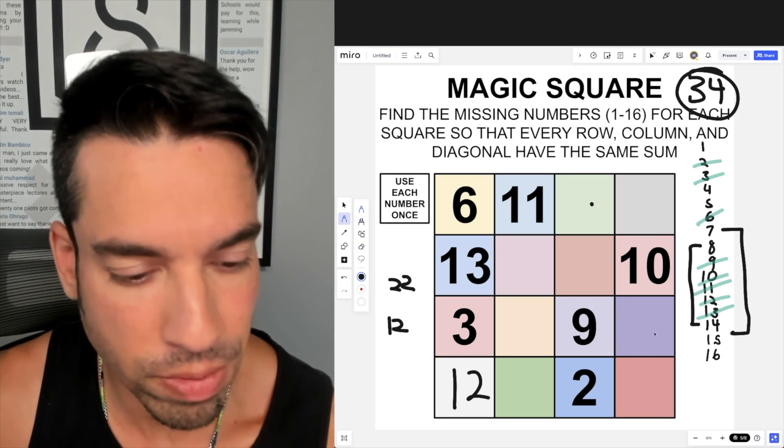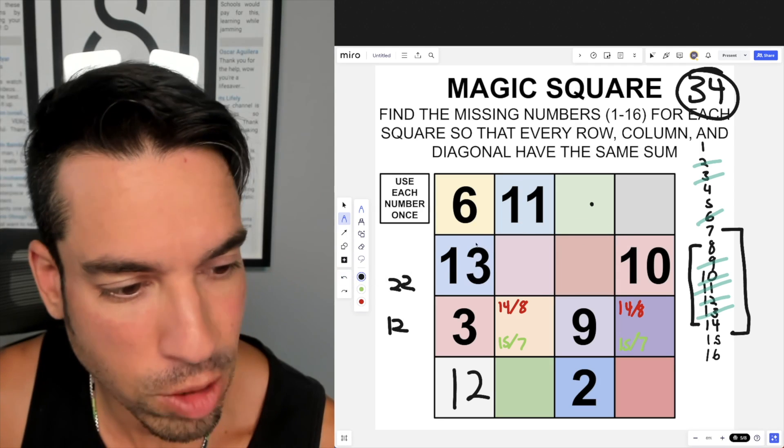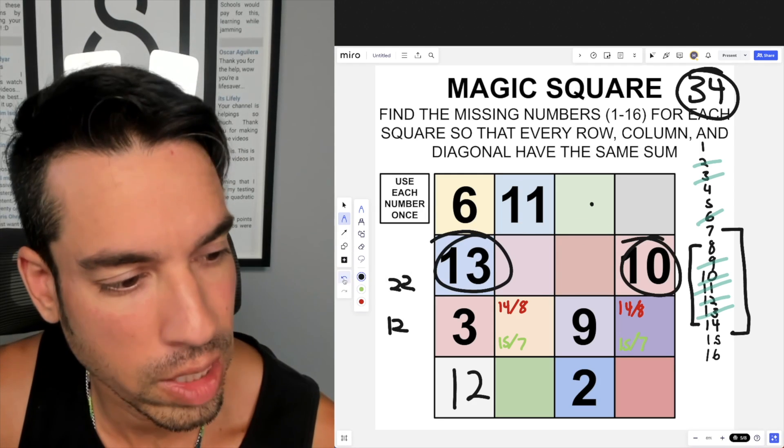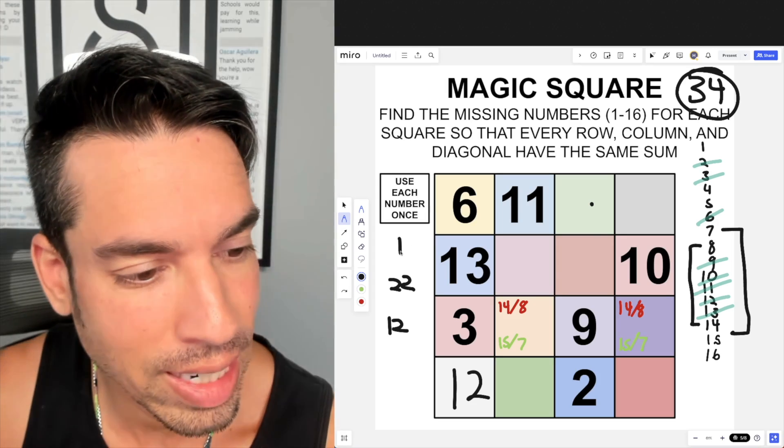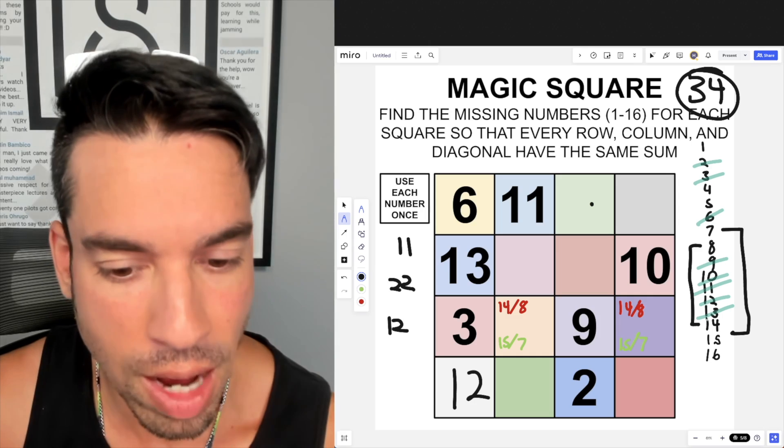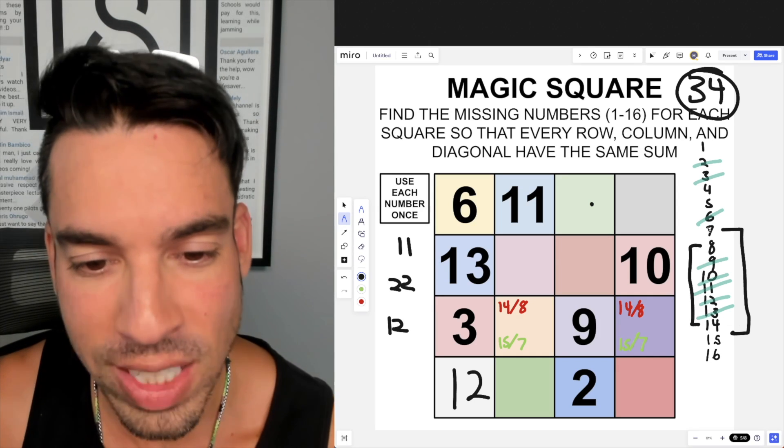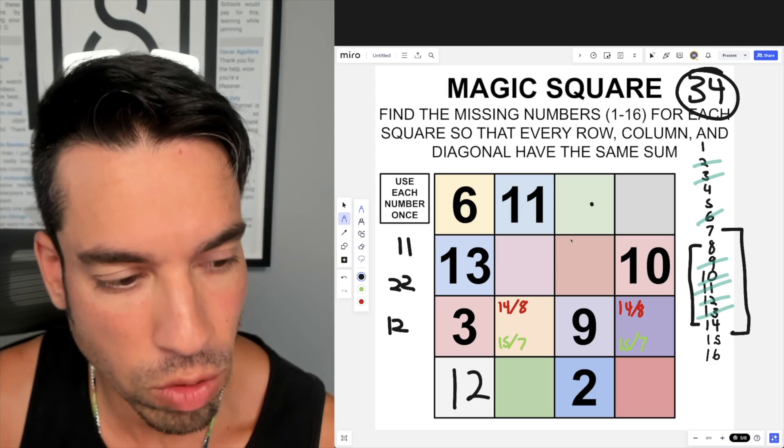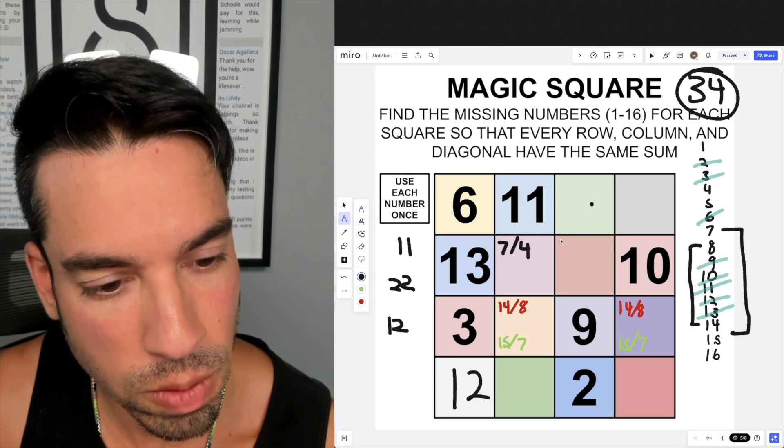Another place that's worthwhile looking is these two inside spots, because I already have 10 and 13, and those are adding up to 23. So to get to 34, I only need 11. So two spaces that are filled by 11—obviously these big dogs are out. Pretty much my only options are 7 and 4. There's no other remaining combination, so we know we've got 7 and 4.